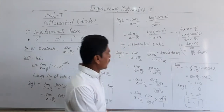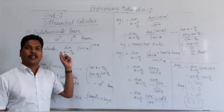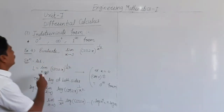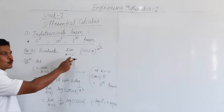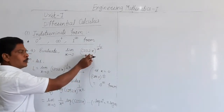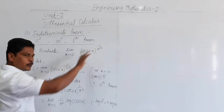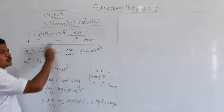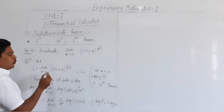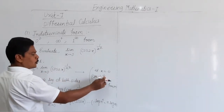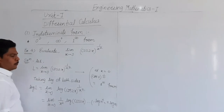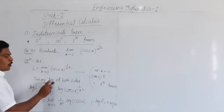So log L equals limit x tends to pi/2 of sin x times cos x, which equals sin(pi/2) times cos(pi/2) equals 1 times 0 equals 0. Therefore L equals e raised to 0 equals 1. Fourth example: evaluate limit x tends to 0 of cos(2x) raised to 1 upon x squared. The base and power are both functions of x. Putting x equal to 0, cos 0 is 1 and 1 upon 0 is infinity, so this is the 1 raised to infinity form. Taking log of both sides.